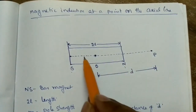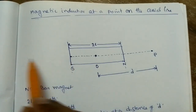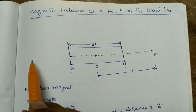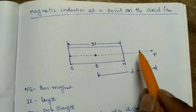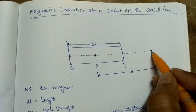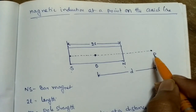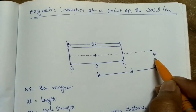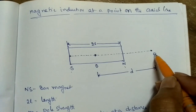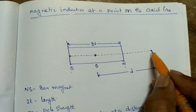The axial line runs along the length of the magnet. Suppose we assume point P on the axial line. We assume point P is near the North Pole side.